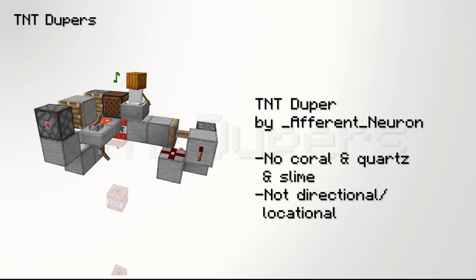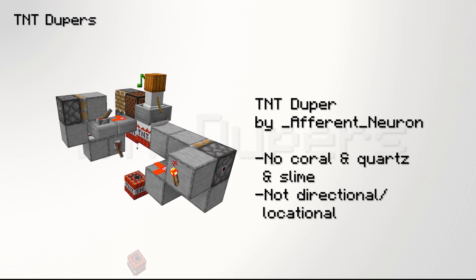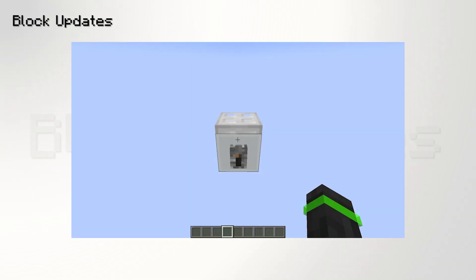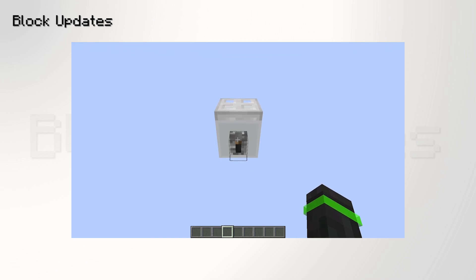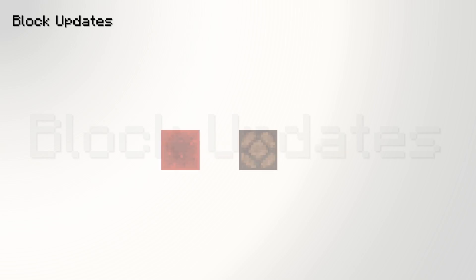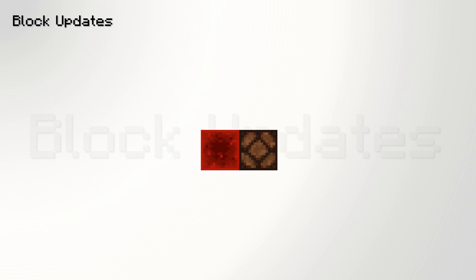So it doesn't use any slime either. To understand how TNT duping works, you will first need to know what block updates are and how pistons move blocks. Let's talk about block updates first. In a game like Minecraft, blocks need a way to interact with each other, so that turning on a lever will open a trapdoor. So Mojang uses an update system. This means that when a block changes in the world, it will tell other blocks that the change happened.